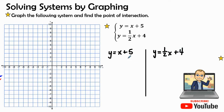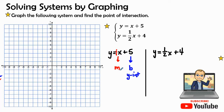For y equals one-half x plus 4, we know right away that because it's in y equals mx plus b form, b is our y-intercept, so 5 is our y-intercept. Our slope is the number in front of x — we don't see a number, so it's the imaginary one, represented by the letter m. The slope is rise over run, and one over one is still one. Our y-intercept is five.